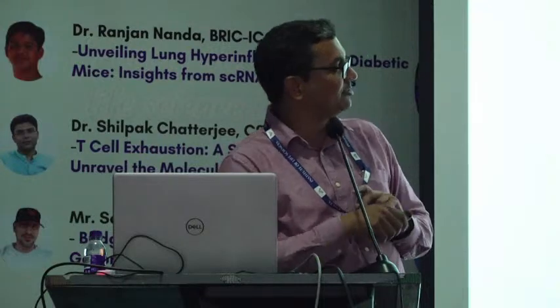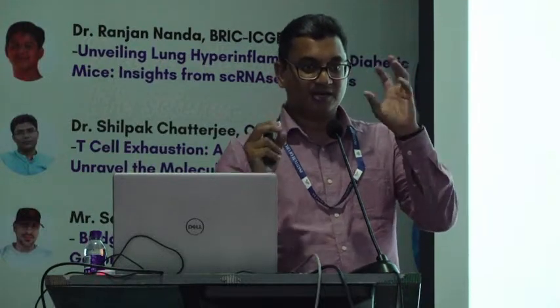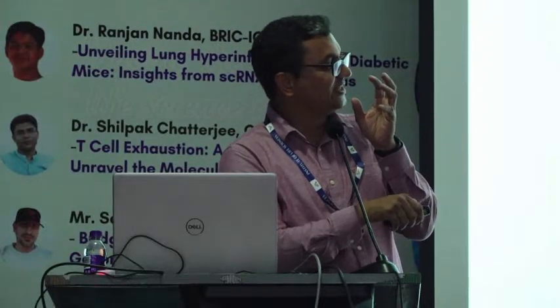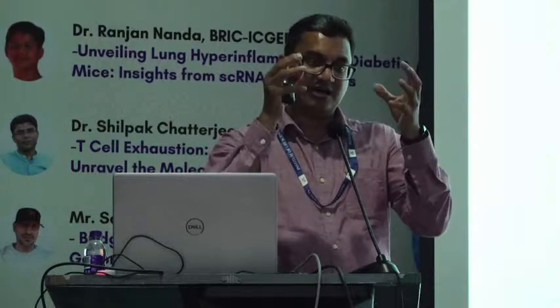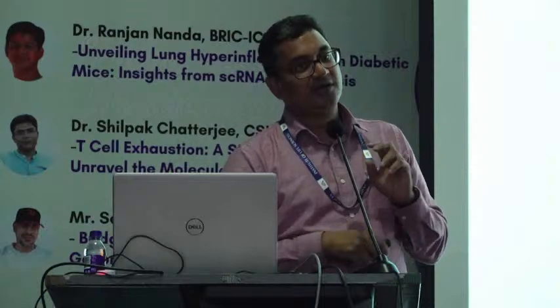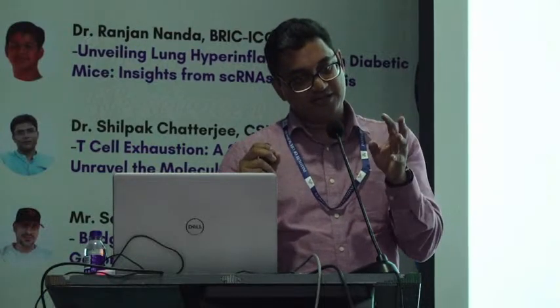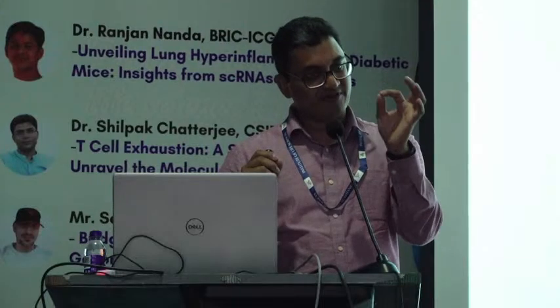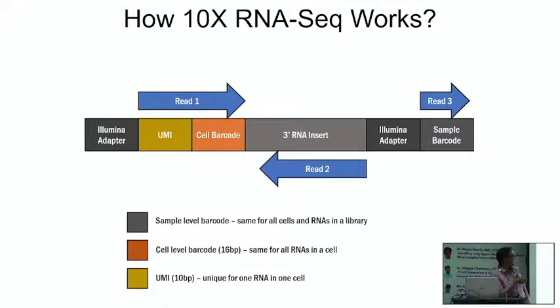This is similar in 10x Genomics — you have RT reagents and cells, and there is oil. Oil is used to make micelle droplets. Basically, your GEM (Gel Bead in Emulsion) is captured in an oil micelle where you have one cell inside. You use the cell number such that most droplets will have a single cell, along with your RT mix. In your first read — a 28 base pair read — you sequence your unique molecular index (UMI) and cell barcode, which tells you from which cell it is coming. Read 2 will be your RNA that is inside, which tells you which transcript it is.